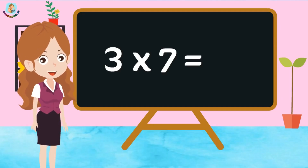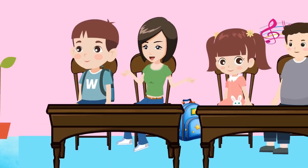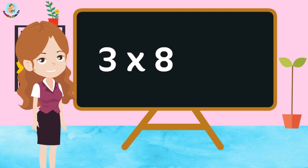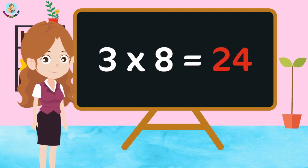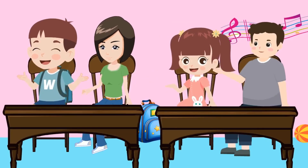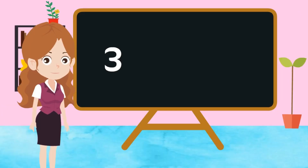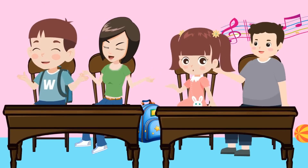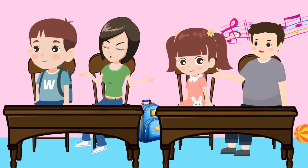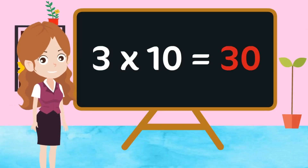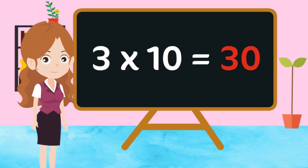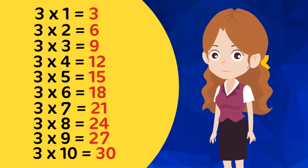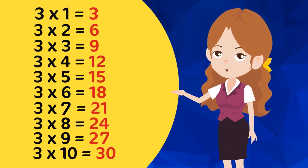3 7s are 21, 3 8s are 24, 3 9s are 27, 3 10s are 30. Now let's speak together.